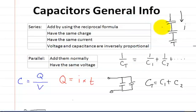When capacitors are in series, they each share the same charge. So if there was a total of 20 coulombs, they would each have 20 coulombs. They also share the same current going through each one. When they're in series, the voltage and capacitance are inversely proportional.